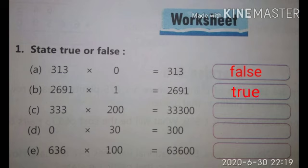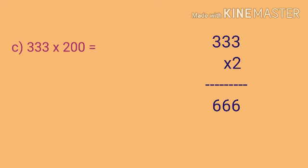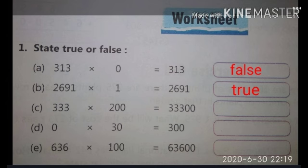Now the next question is 333 multiplied by 200. Let's see what we get when we multiplied 333 by 200. We multiplied 333 by 2 and we get 666. Now add two zeros in 666 and we get 66600. Now in question there is 33300. So children, it will be false.